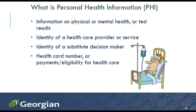Personal health information includes any information about a client's physical or mental health or test results, information identifying a healthcare provider or service provided to a client, information identifying a substitute decision-maker, and identifiers such as a health card number, insurance number, or insurance company indicating eligibility for healthcare. In practice, anything that relates to the client and the healthcare being provided to them should be treated as personal health information.